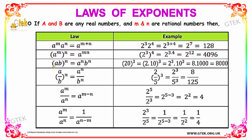The next law: a into b raised to the power n equals base a to the n into base b to the n. We have 20 to the exponent 3, which is 2 into 10, all to the power 3 — so a is 2 and b is 10. We can write base 2 to the exponent 3 into base 10 to the exponent 3. Base 2 to the power 3 is 8, which is 2 into 2 into 2. Multiplied by base 10 to the power 3, which is 10 into 10 into 10, that is 1000. On multiplying 8 into 1000, it's 8000.